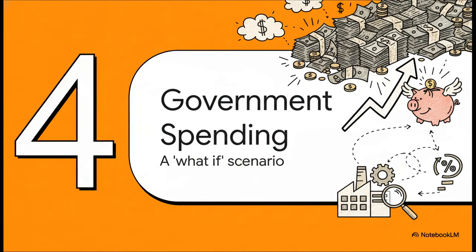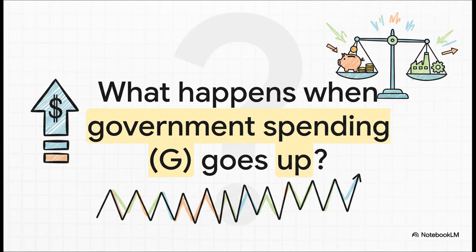Now we have our working model of the economy — let's put it to the test. Let's run a simulation of something that happens all the time in the real world: the government decides it needs to spend more money. This is the million dollar question. When G increases, what happens to our neat little S equals I balance? Does it just break? No. Let's trace the effects step by step using what we've learned.